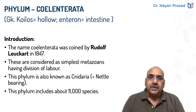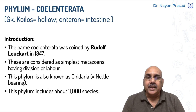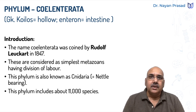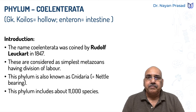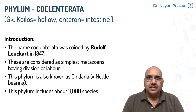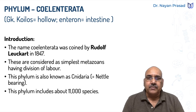This phylum is also called Cnidaria. Cnidaria means cnidae-bearing. The name comes from cnidae. They have special stinging cells, and these stinging cells are for protection, offense, and defense. So they are called Cnidarians.